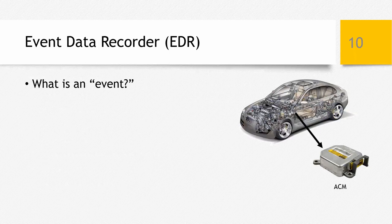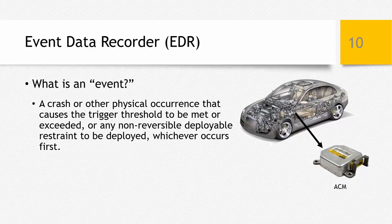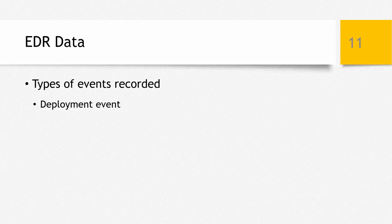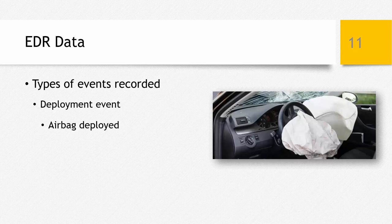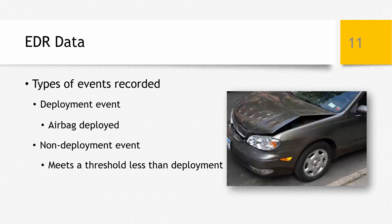What constitutes an event for event data recorders? An event must occur for data to be recorded. An event occurs when a vehicle experiences a very sudden speed change — i.e., a crash — that meets or exceeds a trigger threshold set by the auto manufacturer. There are two types of events: a deployment event, which occurs when a safety system such as an airbag is deployed, causing crash data to be saved to the EDR; and a non-deployment event, which occurs when a vehicle experiences a sudden speed change that didn't deploy an airbag but met the trigger threshold to record data.